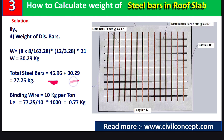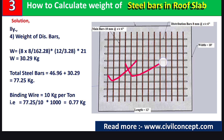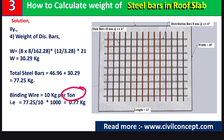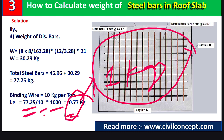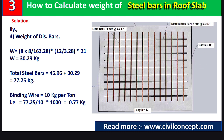Adding both: 46.96 plus 30.29 equals 77.25 kg of steel bars required for this slab. For binding wire, we use the thumb rule: 10 kg of binding wire is required per one ton (1000 kg) of rebar. So 77.25 divided by 1000, multiplied by 10, equals approximately 0.77 kg — roughly 1 kg of binding wire required.